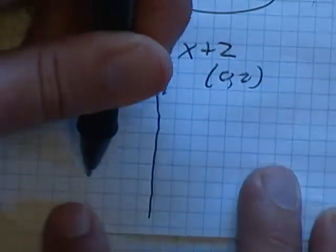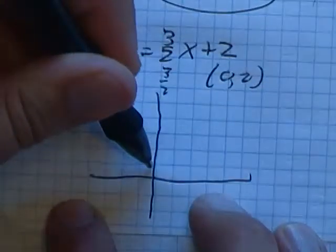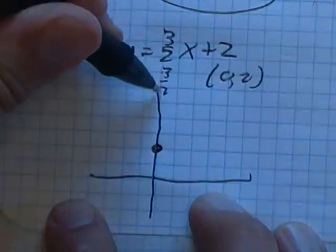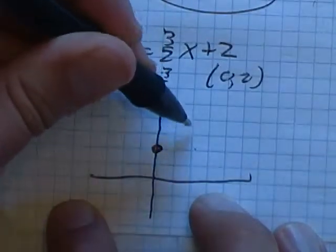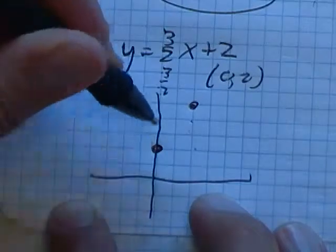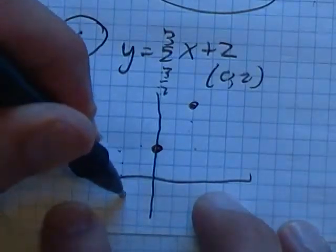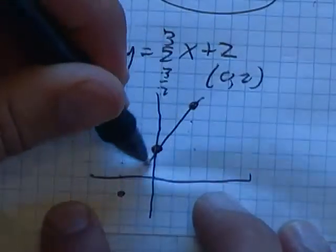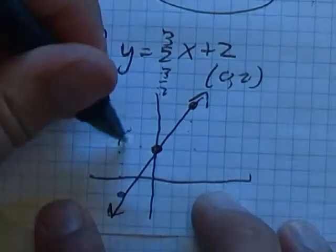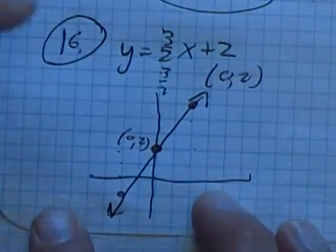So if I take a look at this, (0, -2) is here. 3/2 — rise over run — up 3, over 2. Back 3, down 2. There it is — the line goes through (0, -2).